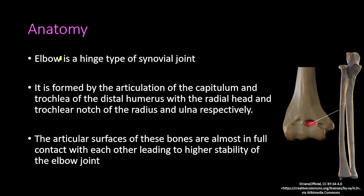To really understand elbow dislocation, we first have to understand the anatomy of the elbow joint. The elbow is a hinge type of synovial joint formed by the articulation of the capitulum and trochlea of the distal humerus with the radial head and trochlear notch of the radius and ulna respectively.